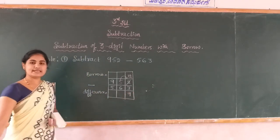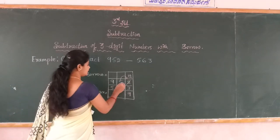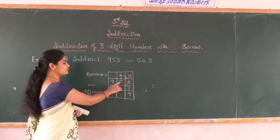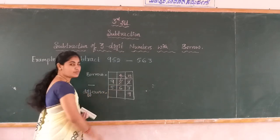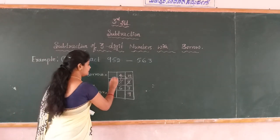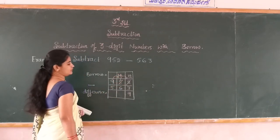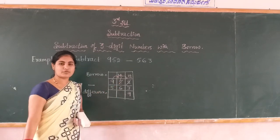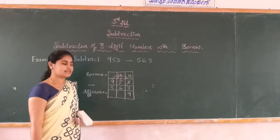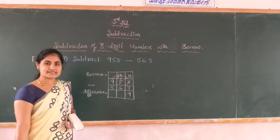12 minus 3 is 9. Now 5 gave 1 borrow to the 2, so 5 becomes 4. Now 4 minus 6 is not possible, so you take borrow from 9; then 4 becomes 14. 14 minus 6 is possible: 14 minus 6 is 8.